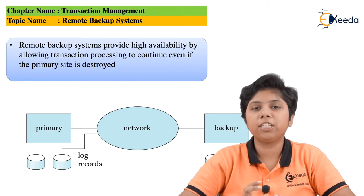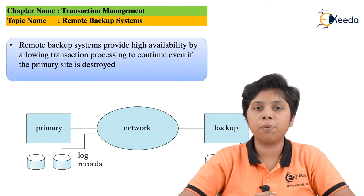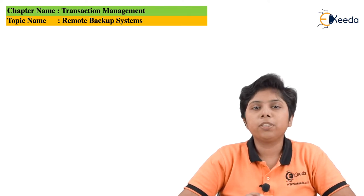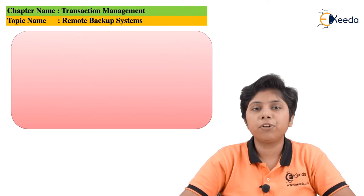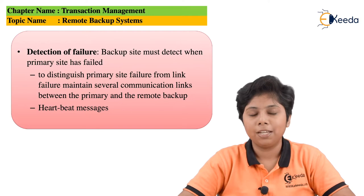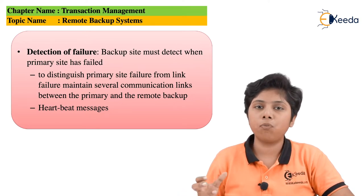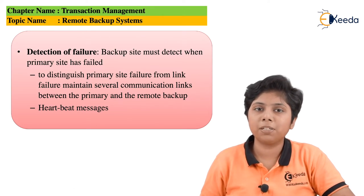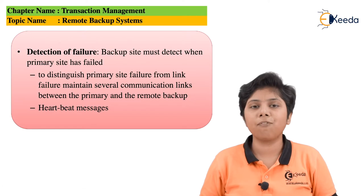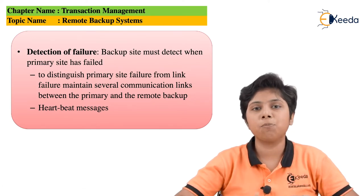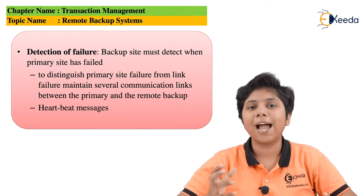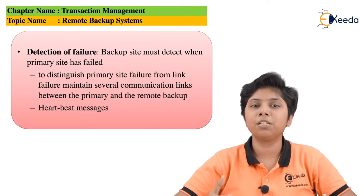While designing remote backup systems we should keep some things in mind. The first is to store data in a meaningful manner, which requires detecting failures. If there is a failure at the primary site, it should be detectable by the remote system. However, it is possible that the remote system misconfigures or misidentifies a network connection failure as a primary site failure — for instance, if the network connection gets interrupted or there is a problem with the leased line or dial-up connection, but the primary system is actually working fine.